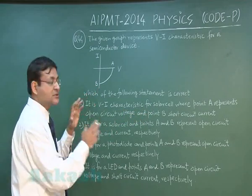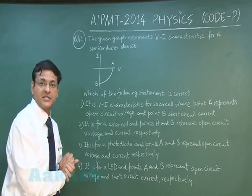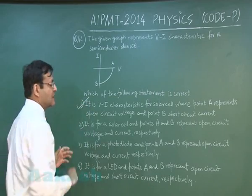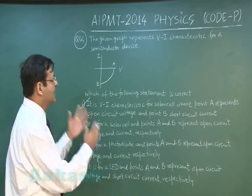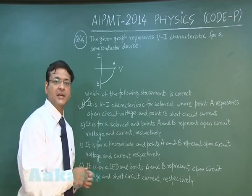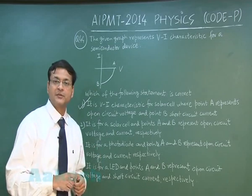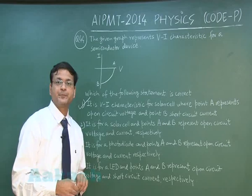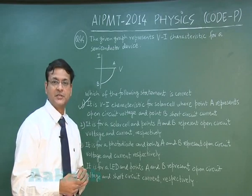Where point A represents open circuit voltage, open circuit means current is 0 so whatever voltage is there so that is open circuit voltage. And point B short circuit current, this B point is short circuit current, short circuit that means the value of voltage there is 0. So most appropriate answer for this question is 1, this is direct statement lifted from the NCERT text.